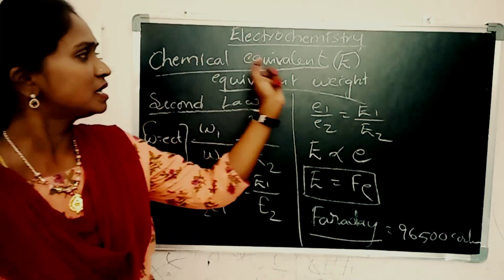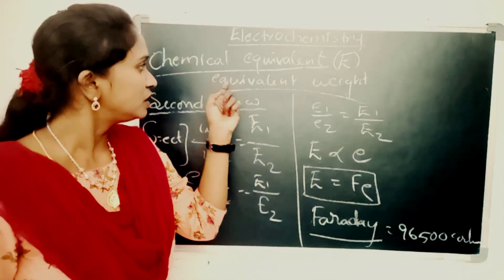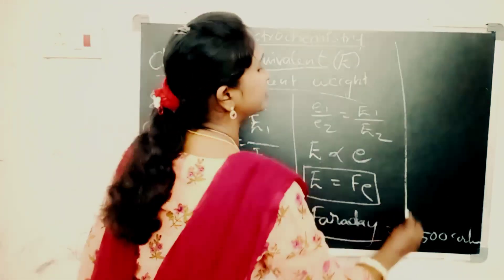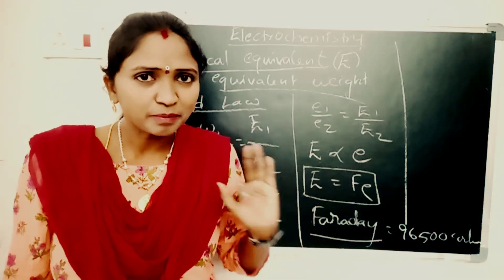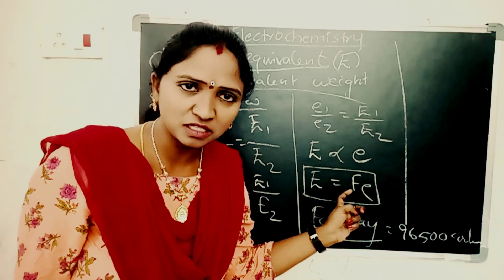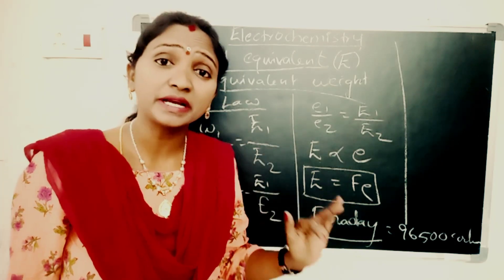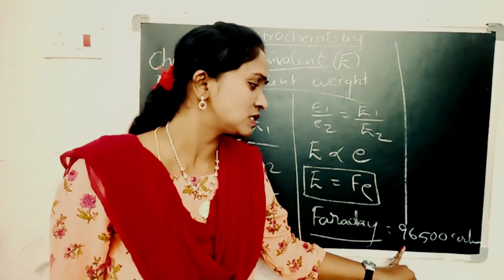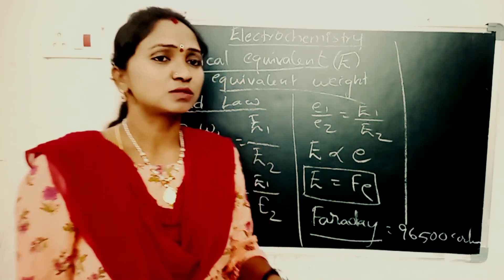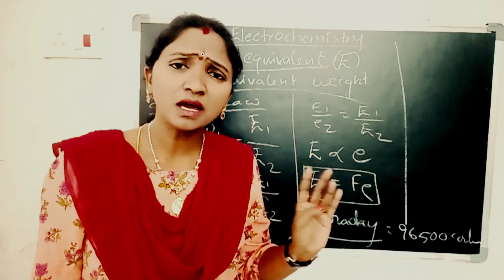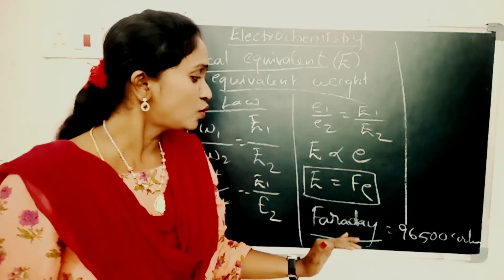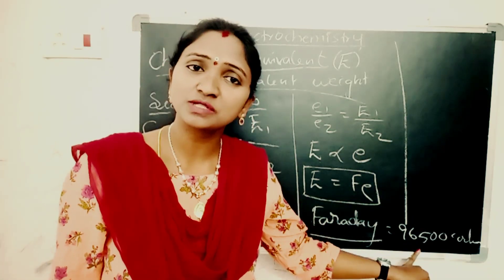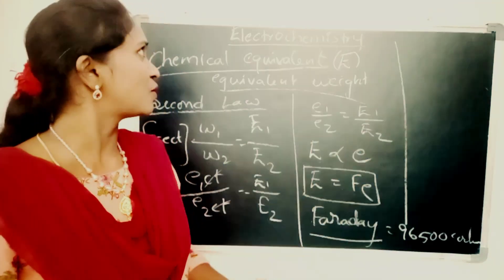Finally, capital E equals F times e. We can define the term chemical equivalent — that is capital E or equivalent weight. Chemical equivalent is defined as the amount of substance deposited or liberated by passing one Faraday of electricity, or equivalently 96500 Coulombs of electricity.